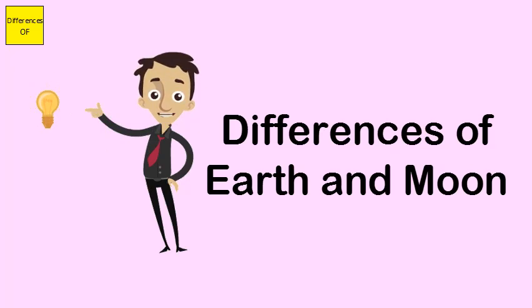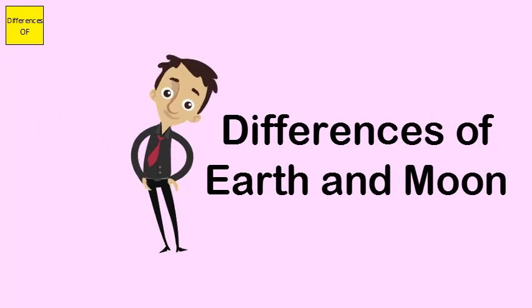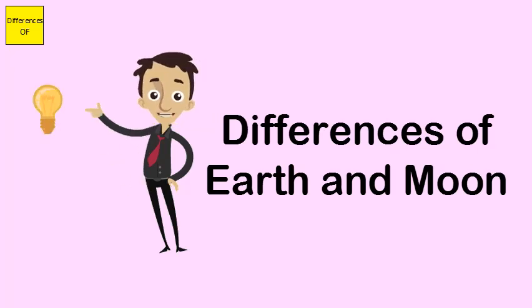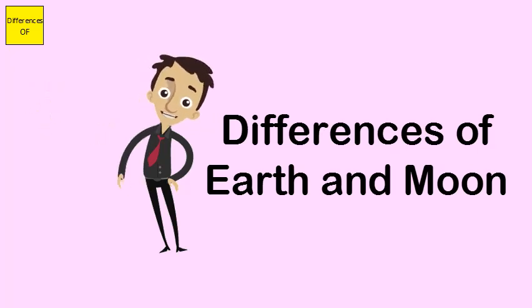Because of its almost non-existent atmosphere, the Moon is incapable of supporting life. Earth is able to support life. Earth's gravitational pull is more. Moon's gravitational pull is less.